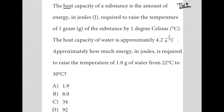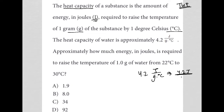They just gave us a definition of what heat capacity is — it's how much energy you need, measured in joules, to raise the temperature of just one gram of the substance by one degree Celsius. The next sentence says the heat capacity of water is approximately 4.2 J/g·°C. So 4.2 joules of energy are required per gram and per one degree Celsius.